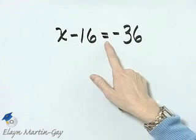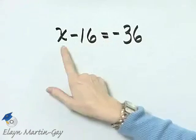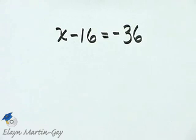Let's solve this equation, and notice it is an equation. We want to solve it for x, so we want x by itself on one side of the equation.